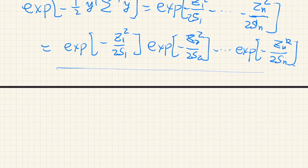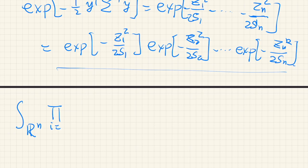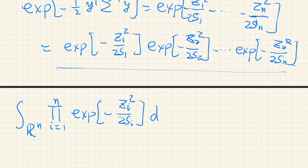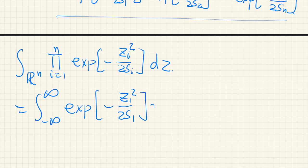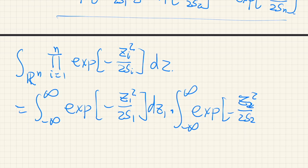So this integral, the integration of this, is easy because we can split it. The integral over all Z of the product becomes the product of 1D integrals: from negative infinity to positive infinity of exp(−Z1²/(2S1)) dZ1, times the integral of exp(−Z2²/(2S2)) dZ2, and so on.